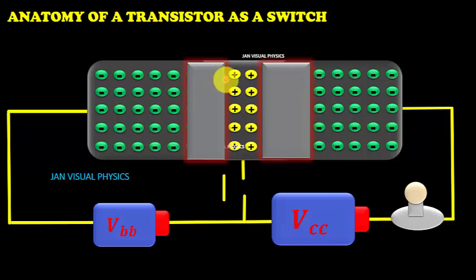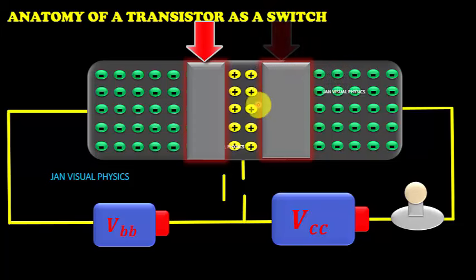A transistor is basically made up of two back to back PN junction diodes. One is emitter base junction and the other is collector base junction. Here we have two depletion regions. One is between emitter base junction and the other between collector base junction.